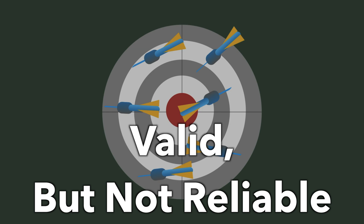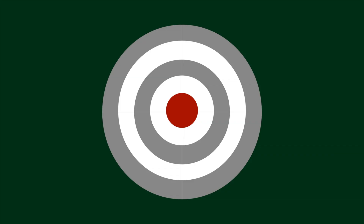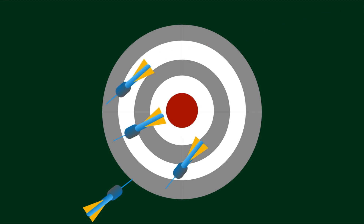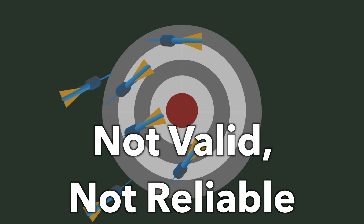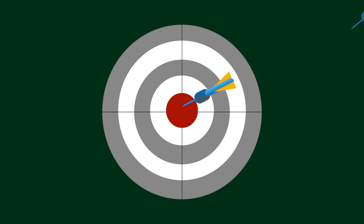To be neither reliable nor valid is like hitting half the target — you're not necessarily hitting the center, and you're all doing it differently. What you want is for everybody to aim for and hit the center of the target.